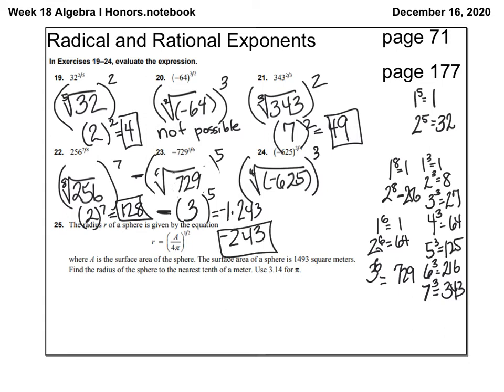Let's look at the last one, number 24. Is the negative inside the parentheses? Yes, so it's like number 20. Can I take the fourth root of negative 625, or raise something to the fourth power and get a negative? No. So it's not possible to do number 24.